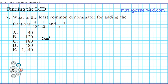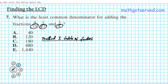The first method, method one, involves using a table of prime factors. The goal here is to find the common denominator of 15, 12, and 8. Those are the denominators, and the lowest common denominator is basically the smallest number that all three numbers go into evenly. Using the method of table of factors, we're going to decompose the three denominators. Let's start with 15 and decompose it into its prime factors.